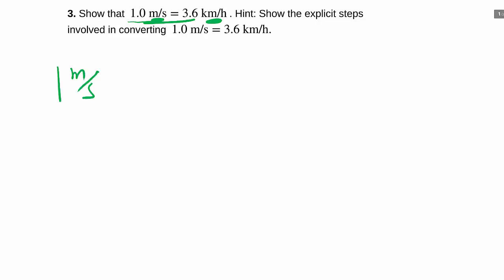So we have one meter per second, and we have to multiply by something that has the same thing top and bottom. To get rid of the meter, we'll have meter underneath, and because one kilometer is in the end, we'll put kilometers on top. To make sure they're the same top and bottom, one kilometer is the same as 1,000 meters. Okay, so that's the meter taken care of.